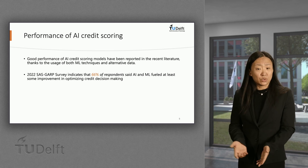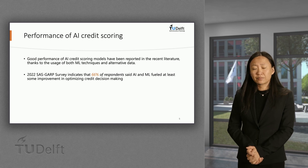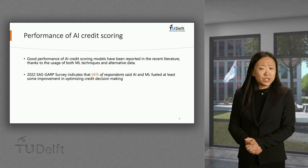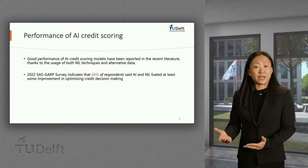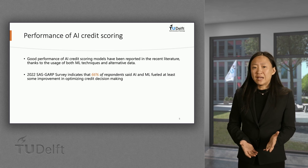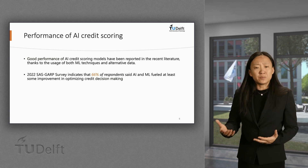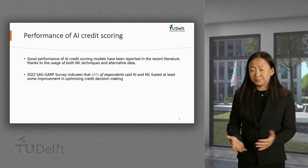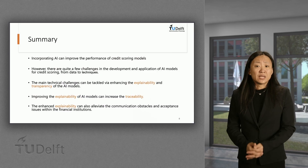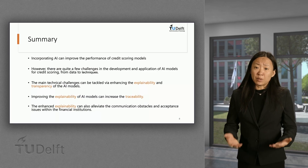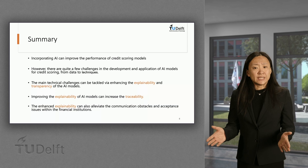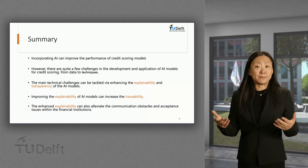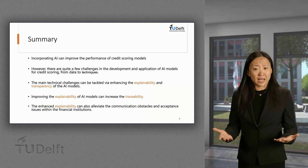A few papers are cited in the course platform, which you can check out later. On the industry side, a few surveys also confirm that financial institutions have experienced improvement on credit risk-related functions via incorporating AI. AI and machine learning have fueled at least some improvements in optimizing credit decision-making. There are a few challenges in development and application of AI models for credit scoring from data to techniques. Note that the main technical challenges can be tackled by enhancing the explainability and transparency of the AI models.